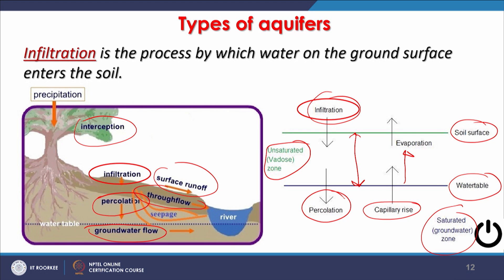That concludes Part 1 of types of aquifers. In the next part we will see a few more types of aquifers. In this part we have mainly seen two types: confined aquifers and unconfined aquifers. Thank you very much.